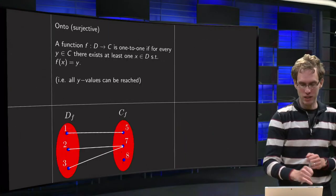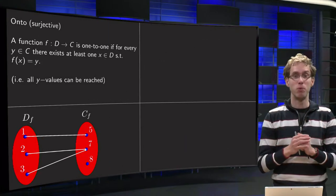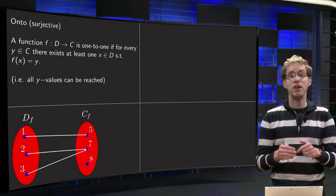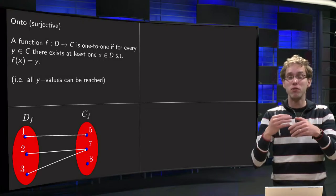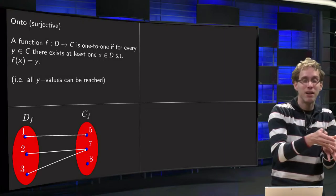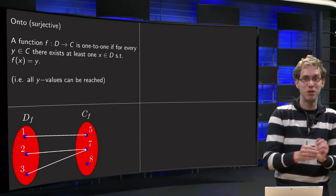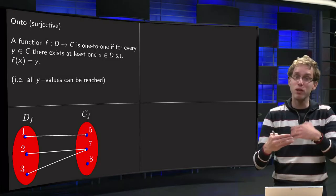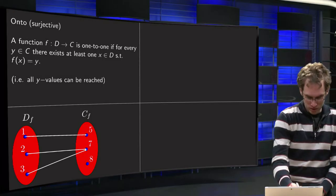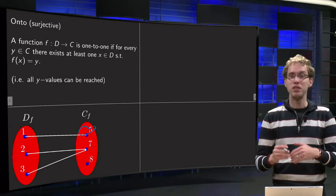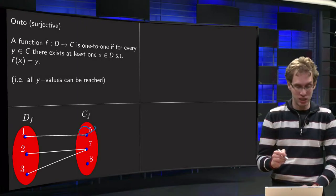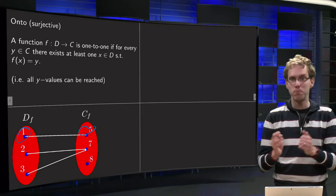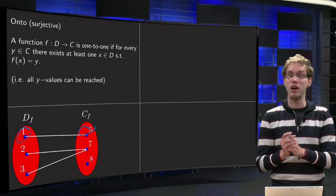Let us look at some examples. We take a very small domain and a very small codomain. For onto you always look from the codomain back to the domain. So you look at all values in the codomain. So we start with the value of 5 here. And we see can this value of 5 be reached? Well yes it can by 1. So that is fine with respect to the onto part.